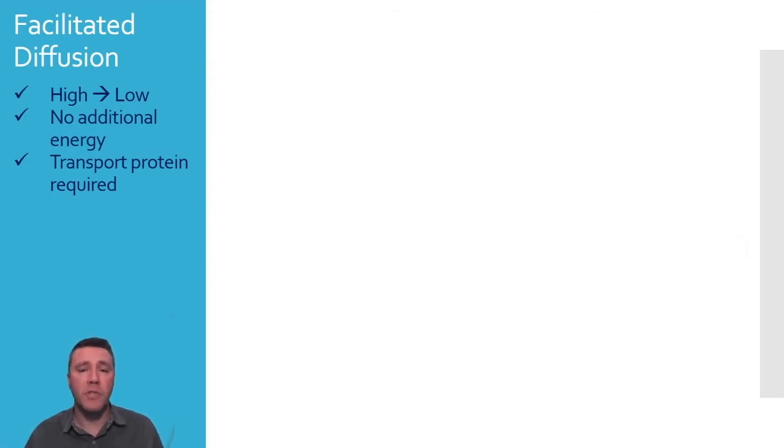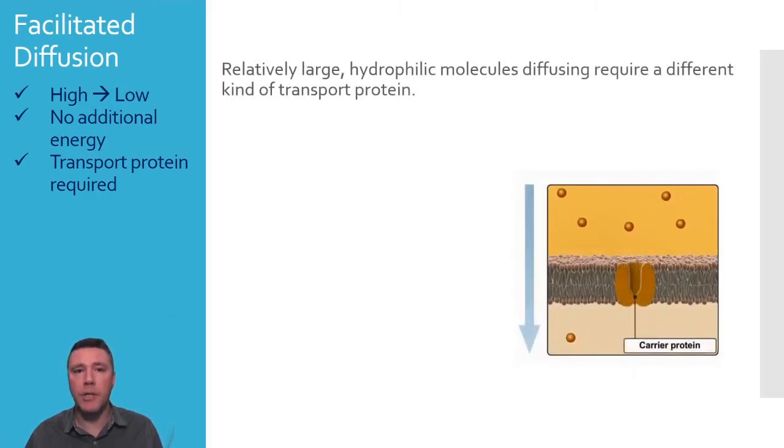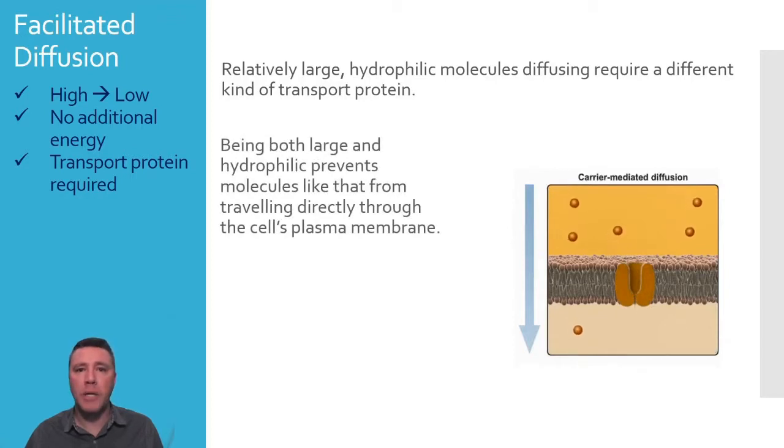Another form of facilitated diffusion is called carrier-mediated facilitated diffusion. This kind of transport is most commonly utilized for moving large hydrophilic molecules. It begins when the molecule to be transported binds to its transport protein using chemical interactions such as ionic bonds, hydrogen bonds, or van der Waals interactions. This binding is molecule and transport protein-specific, meaning that each kind of molecule that travels across the membrane in this fashion would require its own type of transport protein.